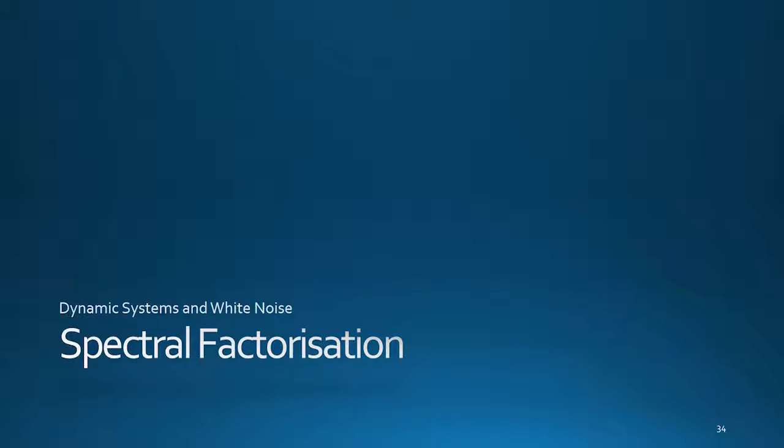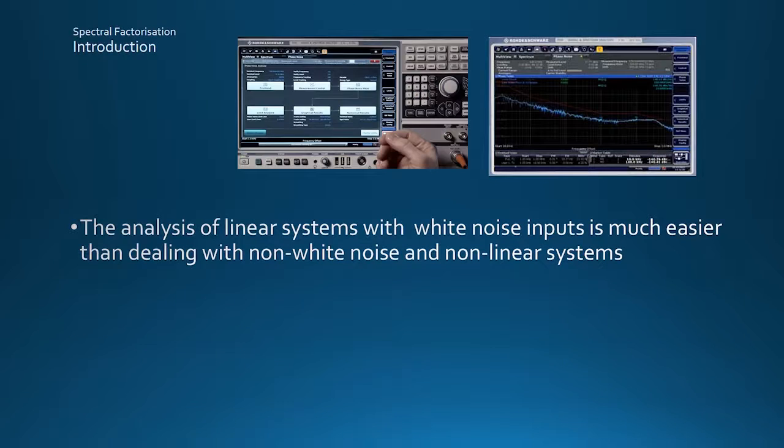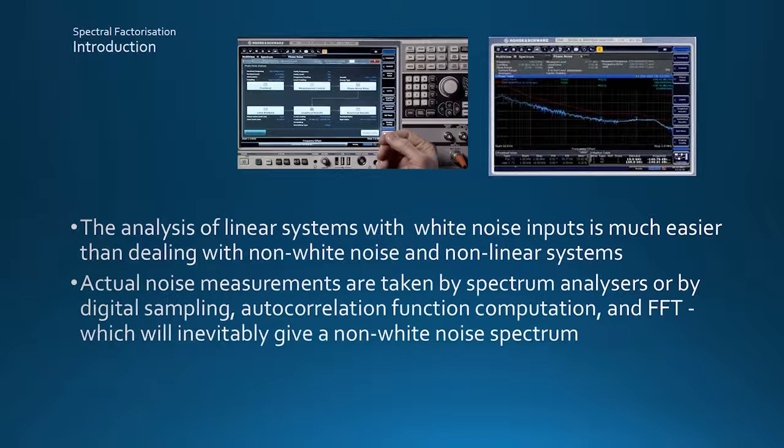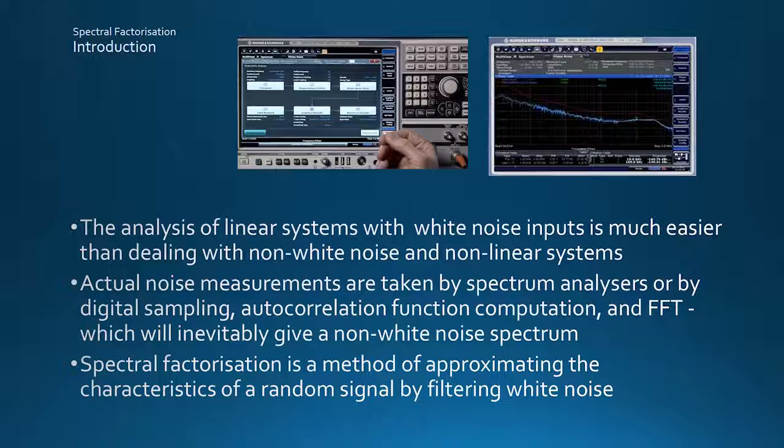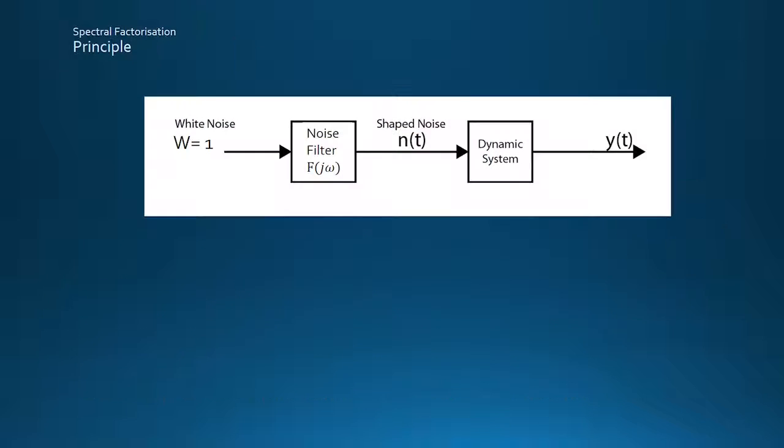Spectral factorization is a method of generating non-white noise signals from white noise. It's useful because so far we've taken the easy option of looking at how systems respond to white noise, but in practice noise isn't often, if ever, white. But if measurements of a noise signal in question show that its spectrum can be approximated by a realizable transfer function, then the spectral factorization technique can be used to generate that signal.